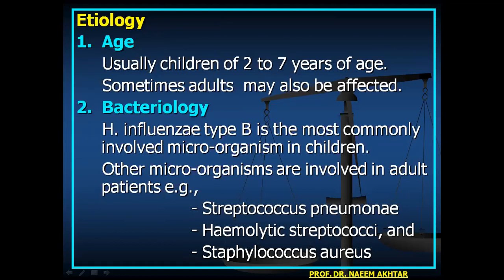Age: usually children of 2 to 7 years are affected, though adults may also be affected. Bacteriology: Haemophilus influenzae type B is the most common organism in children. Other organisms involved in adult patients include Streptococcus pneumoniae, hemolytic streptococci, and Staphylococcus aureus.